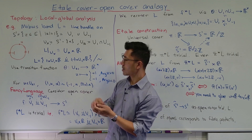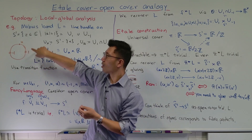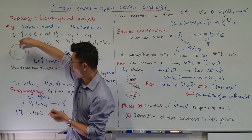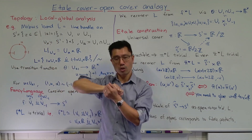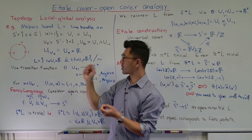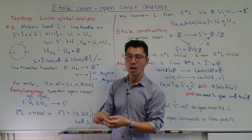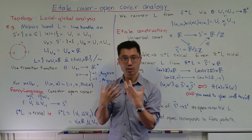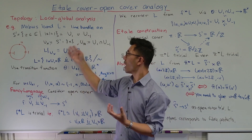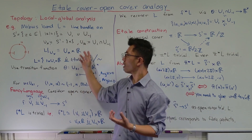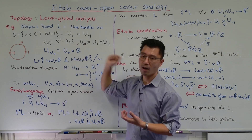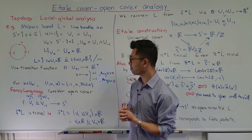That corresponds to the fact that if you cut the Möbius band — in other words, you remove either the copy of R above 1 or minus 1 — you'll get something that you can flatten out, so it will just be the open interval Ux cross R. So that's the local part; that's what topology allows you to do. A vector bundle is something that's locally a trivial vector bundle in the sense that it's a product with some fixed finite-dimensional vector space.